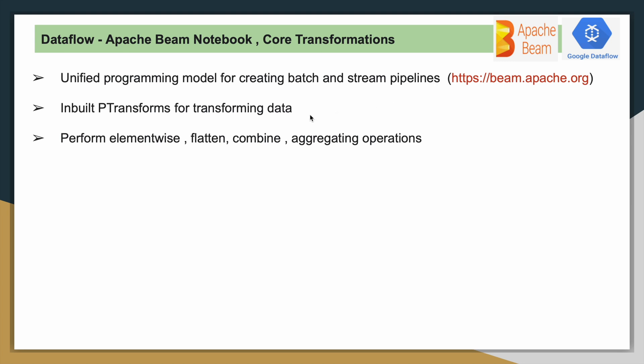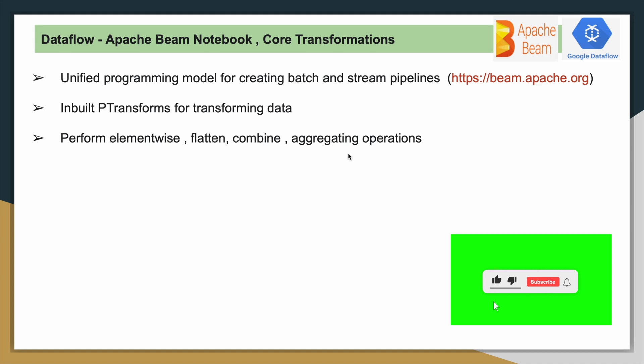In this video we will see what are the different P transformations or core transformations or in-built transformations available. These are the different categories: element-wise transformations, flattening the data, combining the data, and also aggregating the data.